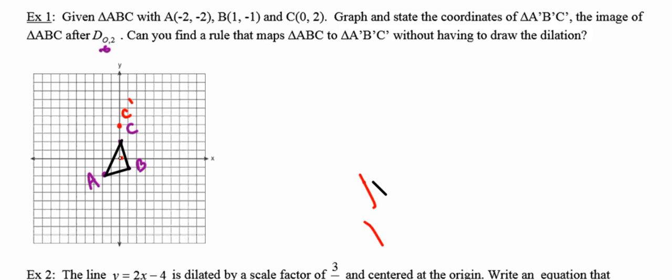So C' is going to be right up there at (0, 4). B', if I extend that line that connects the center of dilation to B and keep going and make my distance double what it was, B' is going to be right there. And likewise, A'.